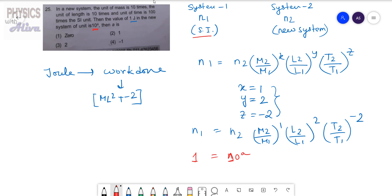Mass is 10 times than the SI system, right, so we will write 10 here. Length is 10 times than SI system, but time is 100 times than SI system.